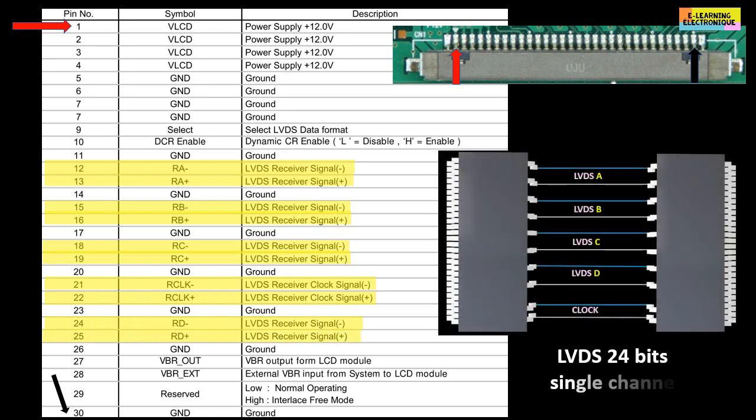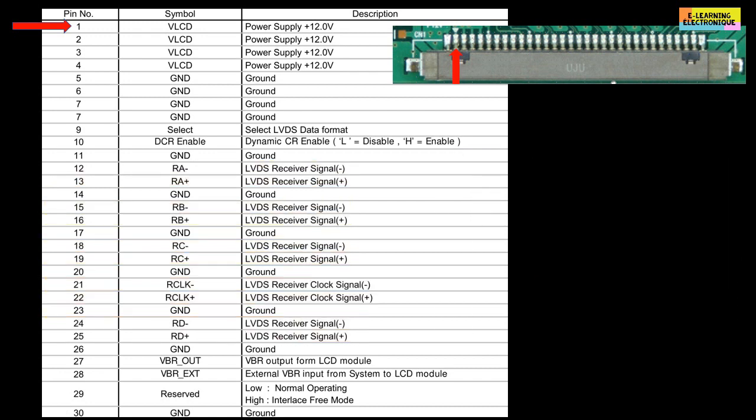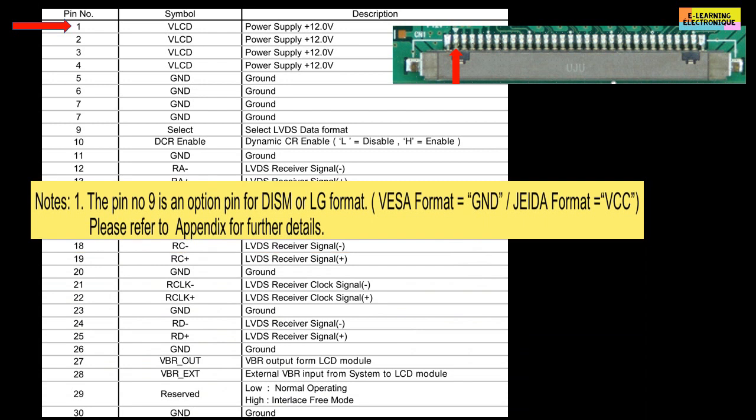This configuration is that of a 24-bits LVDS with a single channel. The datasheet indicates that pin number 9 is used to select the LVDS format. If pin 9 is connected to GND which means ground, we will get the VESA format. On the other hand, if pin 9 is supplied with VCC, we will obtain the JEIDA format.